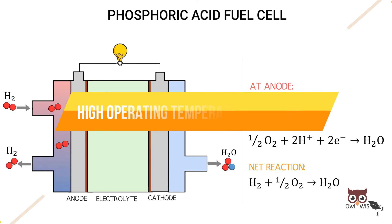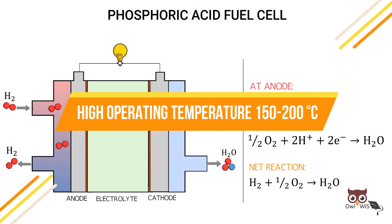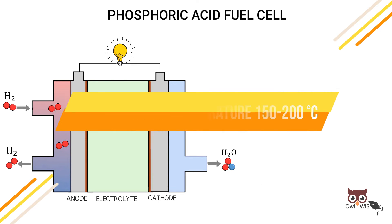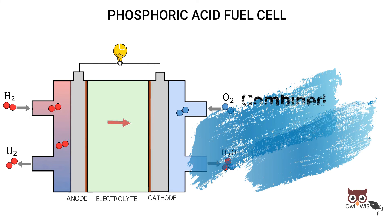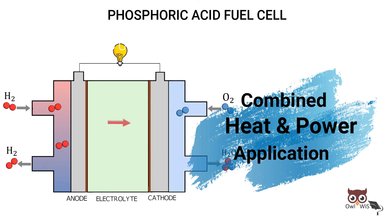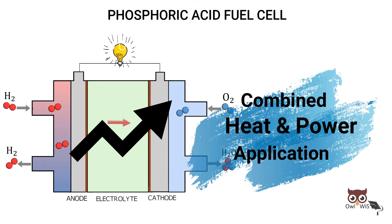PAFC have high operating temperature of 150 to 200 degree Celsius. Due to this, the expelled water can be converted to steam for air and water heating, that is combined heat and power application. This increases efficiency up to 70 percent.